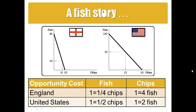When determining comparative advantage, you're looking at opportunity costs — and an opportunity cost is essentially a price. We're looking for who can produce a good at a lower price; who gives up the least amount of the other good. When we look at fish, the United States gives up half a chip, while England gives up only a quarter chip. The cost to England of producing fish is half that of the United States, so England should focus on producing fish.